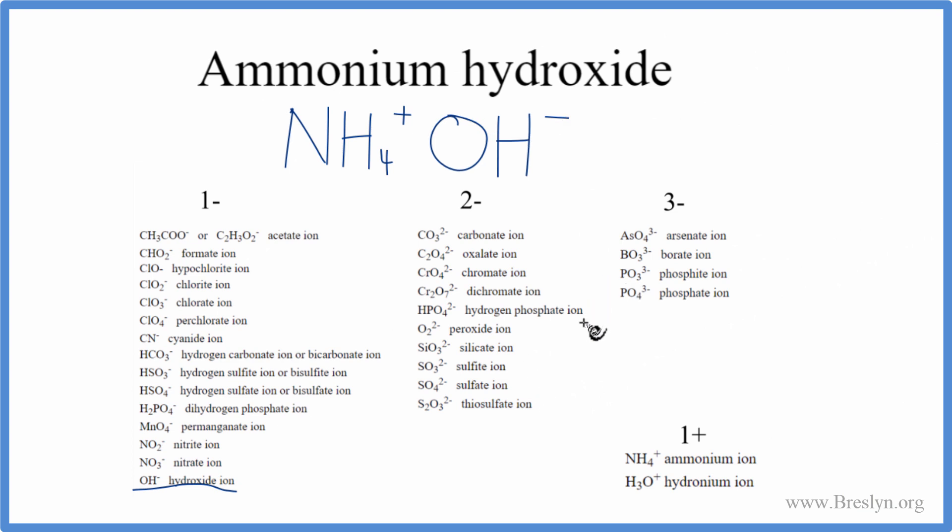And now we have the formula for ammonium hydroxide. We have the NH4+ and the OH-, the plus and the minus, they cancel out. So let's get rid of those. We have a net charge of zero. So this is the correct formula for ammonium hydroxide, NH4OH.